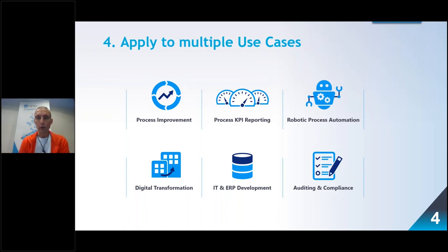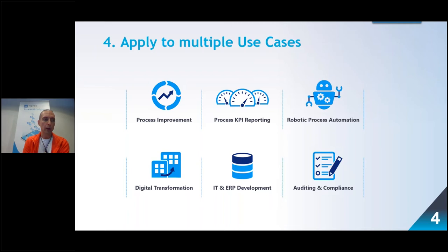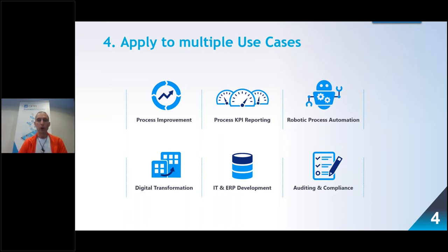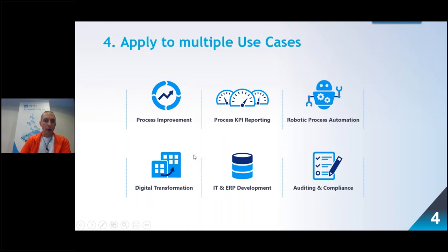Use case number three is robotic process automation. To be successful with RPA — as Gartner research also says — you need a good understanding of how the process goes at the moment: what exceptions there are, what parts you can automate, and what parts you should first streamline. You need to build rules so the process is repeatable enough for RPA to succeed. Then you can monitor whether the automation is having a positive or negative effect on other parts of the process.